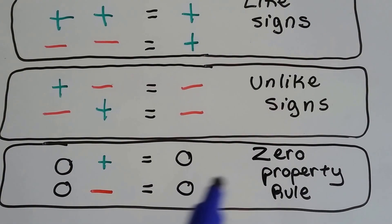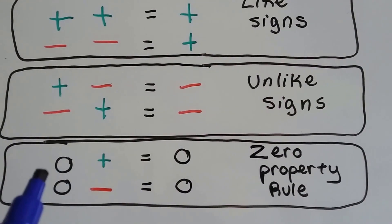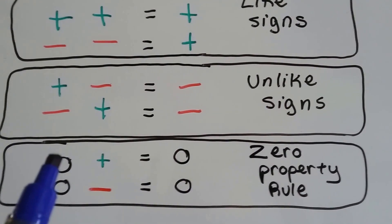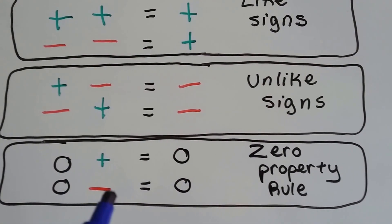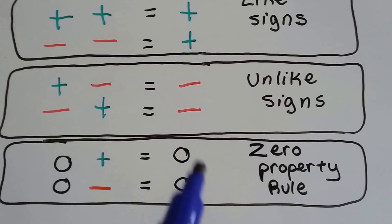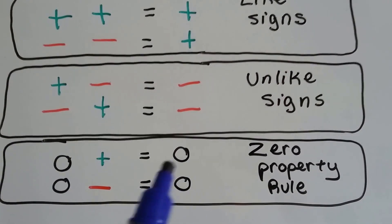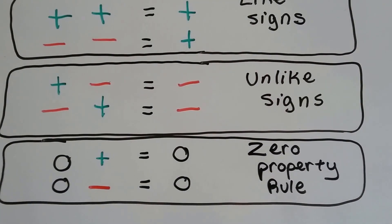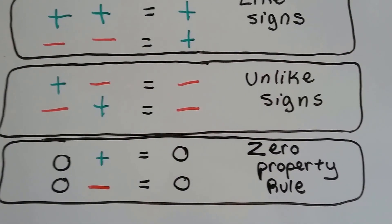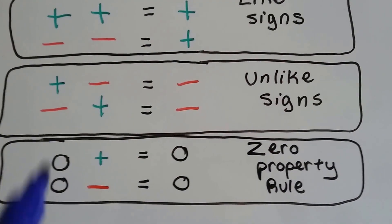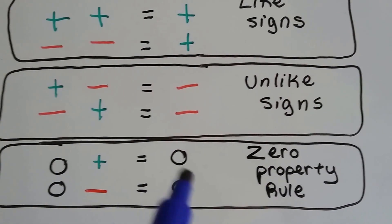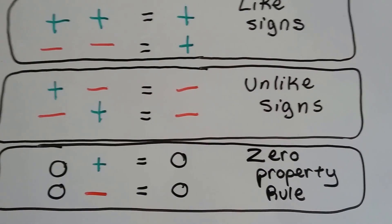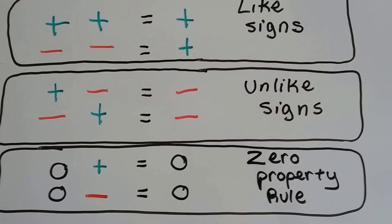There's a thing called the zero property rule. Anytime we multiply a zero with a positive number or a negative number, it's just going to be zero. We don't have to worry about the sign. No matter what we multiply by zero, the answer is going to be zero.